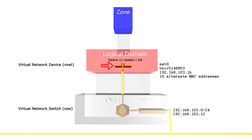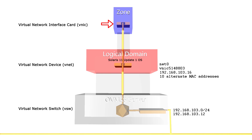Lastly, the third device is a Virtual Network Interface Card, or VNIC, and it gets created on a non-global zone by a VNET during zone provisioning. During provisioning, you specify an IP address for the VNET's port, and Ops Center automatically assigns one of the alternate MAC addresses.